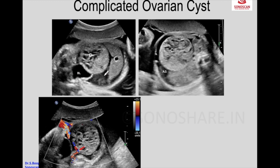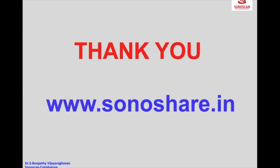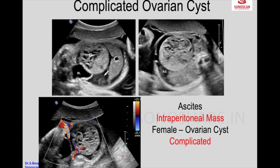A fruit-and-branch appearance with a single vessel from the iliac vessel supplying the mass — this is a female fetus, so this is an ovarian cyst which is complicated; because of the complication it has leaked into the peritoneal cavity resulting in exudative ascites. So that is exudative ascites: intraperitoneal mass, female fetus — complicated ovarian cyst presenting as exudative ascites. Main causes of exudative ascites: meconium peritonitis, URSM sequence, and complicated ovarian cyst. Thank you.